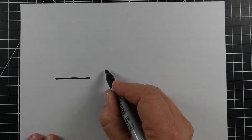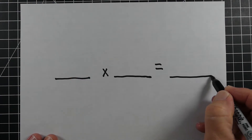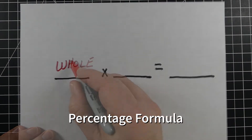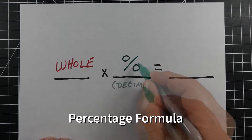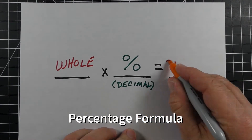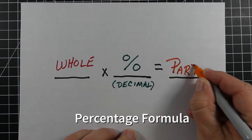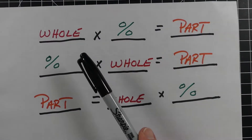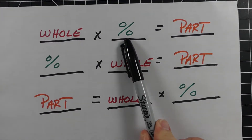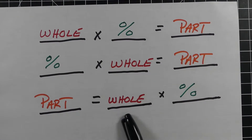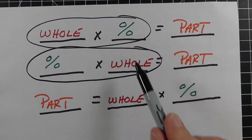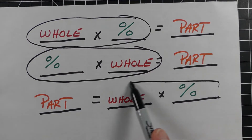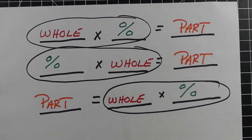When working with percentages, I like to use a simple formula: take the whole amount times the percent written as a decimal, and it equals the part. I can also write it as percent times whole. No matter how you set it up, you should have percent and whole on one side, and part on the other.